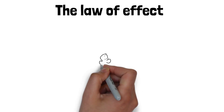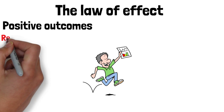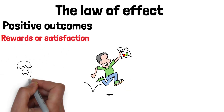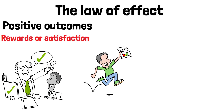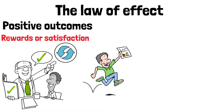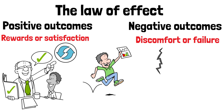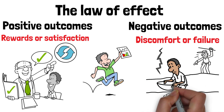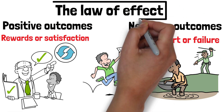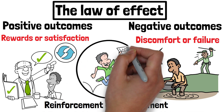In essence, the law of effect operates on the idea that behaviour is influenced by its consequences. Positive outcomes such as rewards or satisfaction strengthen the association between a behaviour and its result, increasing the likelihood that the behaviour will be repeated. Conversely, negative outcomes such as discomfort or failure weaken the association, making the behaviour less likely to reoccur. This principle highlights the role of reinforcement and punishment in learning and behaviour modification.